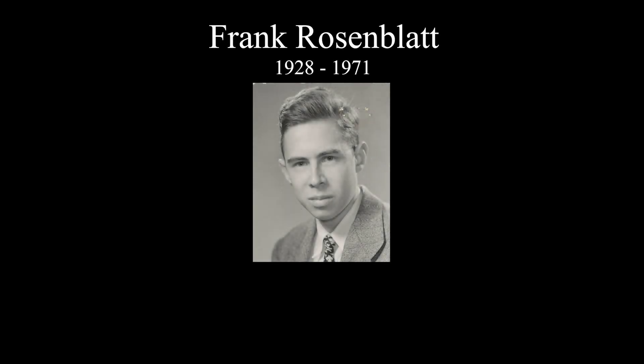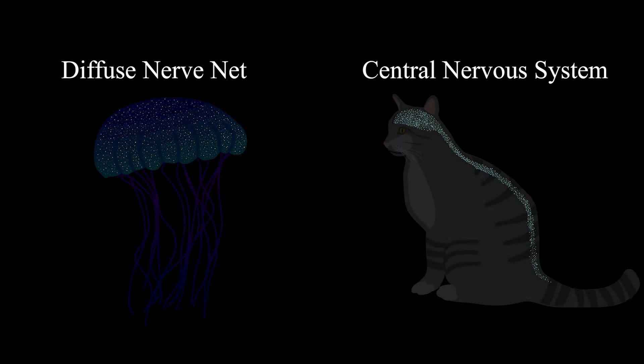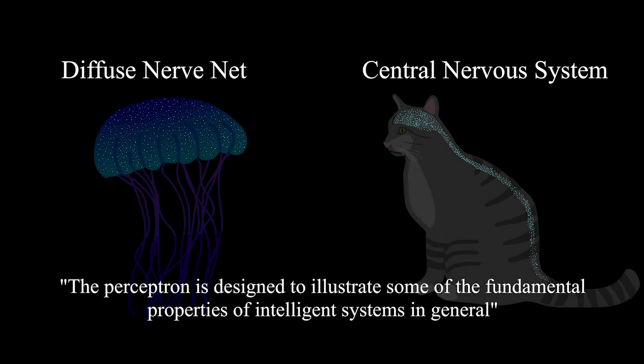Frank Rosenblatt, an American psychologist, first invented perceptrons around 1957. This term was meant to describe many different theoretical nerve nets designed to illustrate some of the fundamental properties of intelligent systems in general.